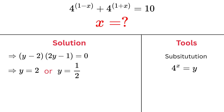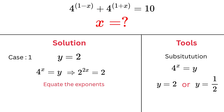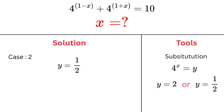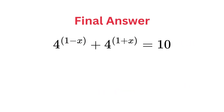Step 5: Back-substitute and solve for x. Remember, we assumed 4 to the power x equals y, so now we solve each case. Case 1: y equals 2, so 4 to the power x equals 2. Writing 4 as 2 squared gives 2 to the power 2x equals 2 to the power 1, so 2x equals 1, which gives x equals 1 half. Case 2: y equals 1 half, so 4 to the power x equals 1 half. Writing 4 as 2 squared: 2 to the power 2x equals 2 to the power negative 1, so 2x equals negative 1, giving x equals negative 1 half. So the two possible values of x are x equals 1 half and x equals negative 1 half.